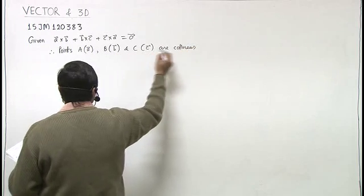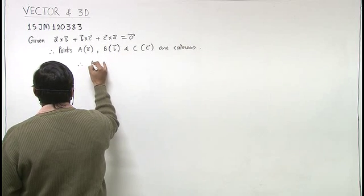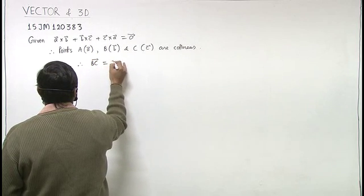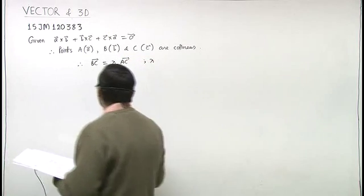Now since they are collinear, we can write BC equal to lambda times AC for some scalar lambda.